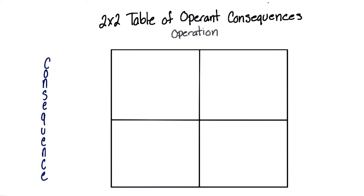The main thing to remember about operant conditioning is that reinforcement always increases the future likelihood of a behavior occurring, and punishment always decreases the likelihood of a behavior occurring.